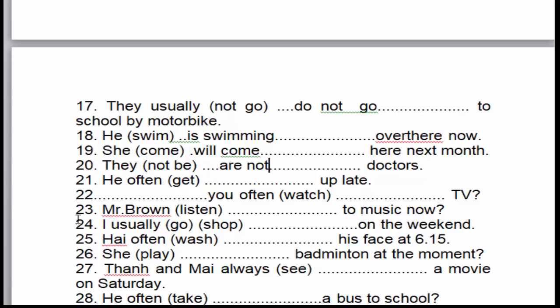Câu số 21: 'He often gets up late.' Anh ấy thường thức khuya. 'Often' là dấu hiệu nhận biết của thì hiện tại đơn. 'He' là chủ ngữ số ít, cho nên động từ 'get' phải thêm 's'. Trong trường hợp này chúng ta thêm 'es' → 'gets'.